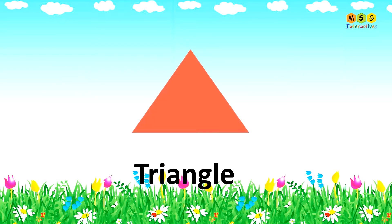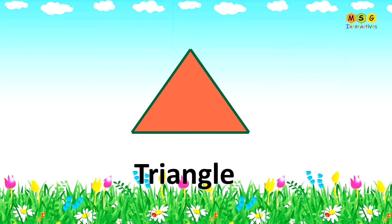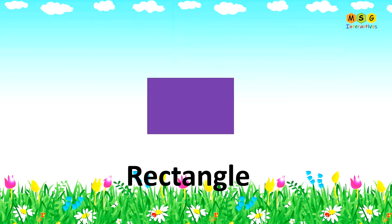Triangle: a triangle has 3 sides and 3 corners. Rectangle: a rectangle has 4 sides and 4 corners.